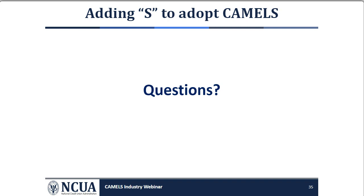Is the requirement for credit unions to have a separate IRR policy only applicable to federal credit unions, or does it apply to federally insured but state-chartered credit unions? This requirement is under Part 741, so it applies to both federal and state-chartered credit unions — or any federally insured credit union.